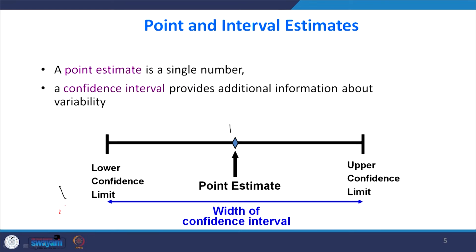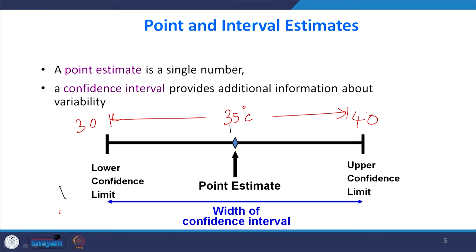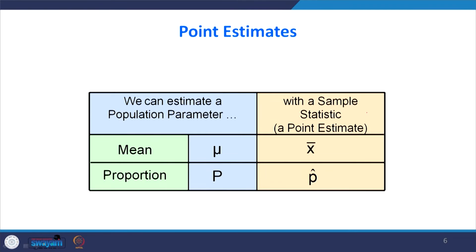If I give a lower limit and upper limit — say 30 to 40 — that is a confidence interval. When I say 35 it is a single number, but when I say 30 to 40 that is a confidence interval. The value 30 is called the lower confidence limit and 40 is called the upper confidence limit. The difference between them is the width of the confidence interval.